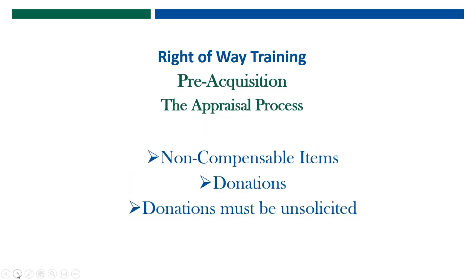There are some things that are non-compensable items. Whoever you're working with concerning a project, you might want to discuss some of the things that are non-compensable. For example, driveway easements and fencing easements are not considered compensable items because they are gratuities — they are providing a service to the owners. So when you get an appraisal sometime, you'll see where they're not compensating for certain items and certain easements, and that is why — because they are non-compensable items.